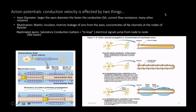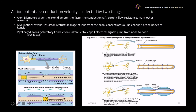Many things determine how fast an action potential propagates along an axon, but the two most important are axon diameter and myelination. Axon diameter makes sense — a small diameter can fit only a few sodium channels, whereas a larger diameter fits many more, allowing the action potential to reach threshold and propagate much faster.